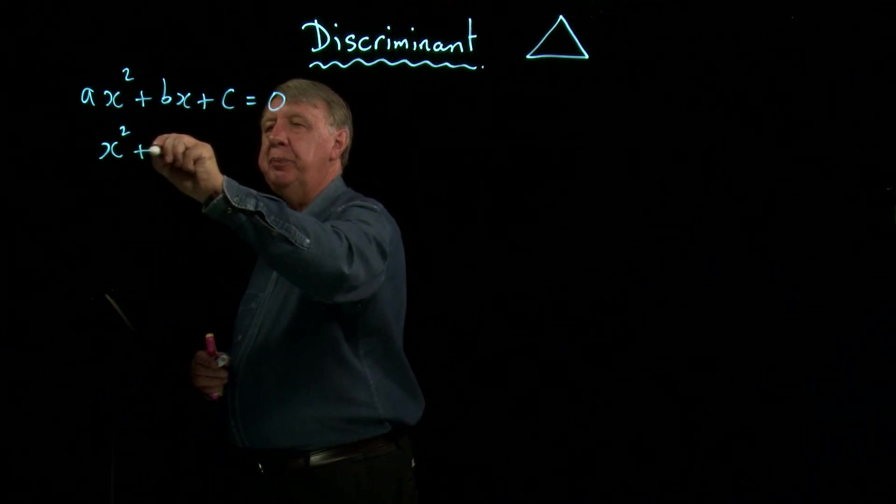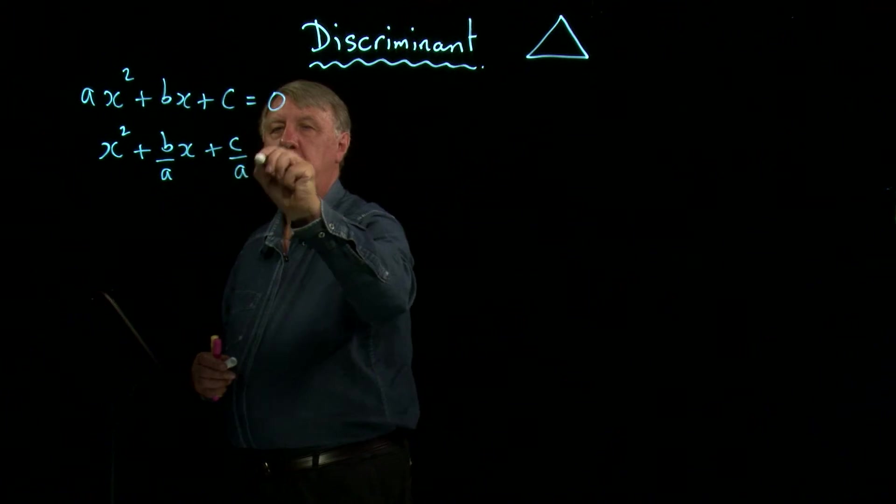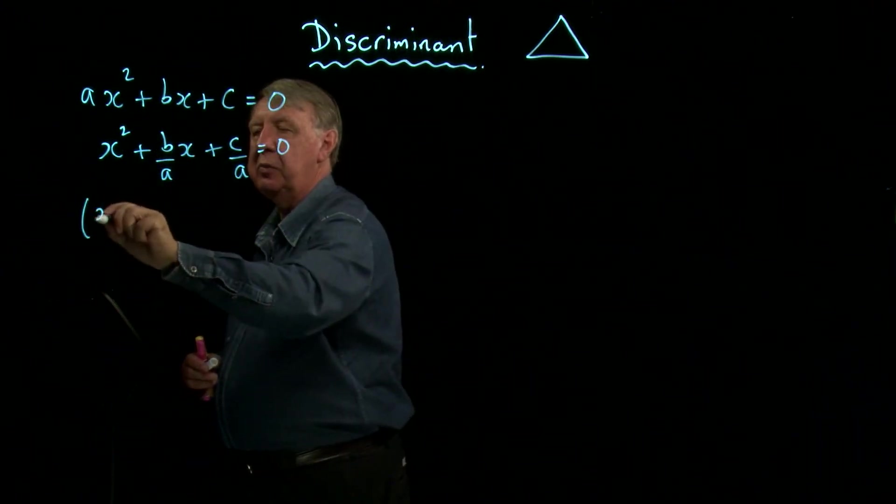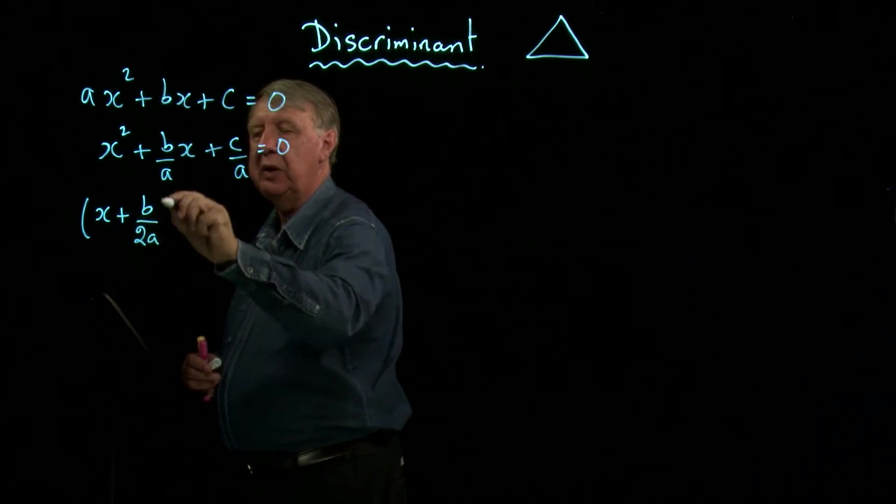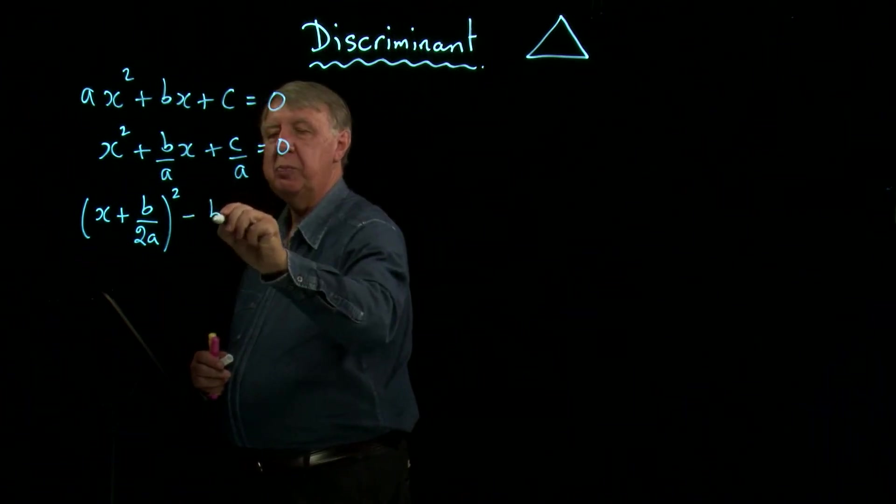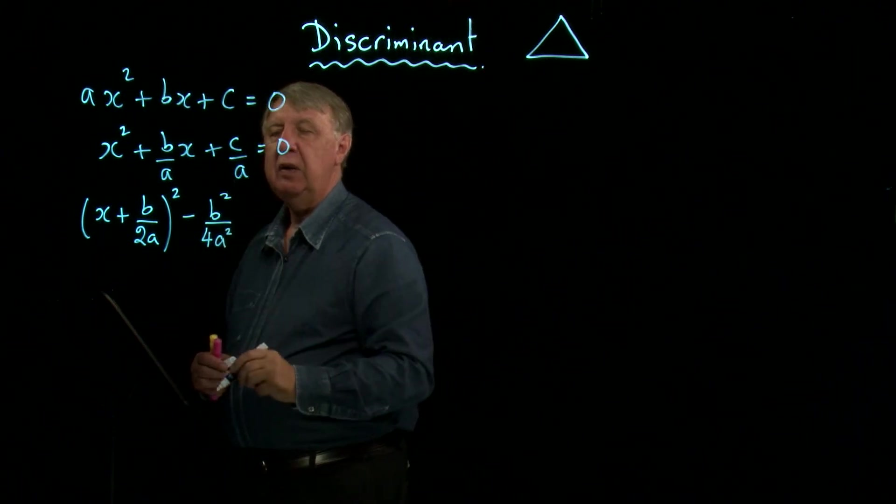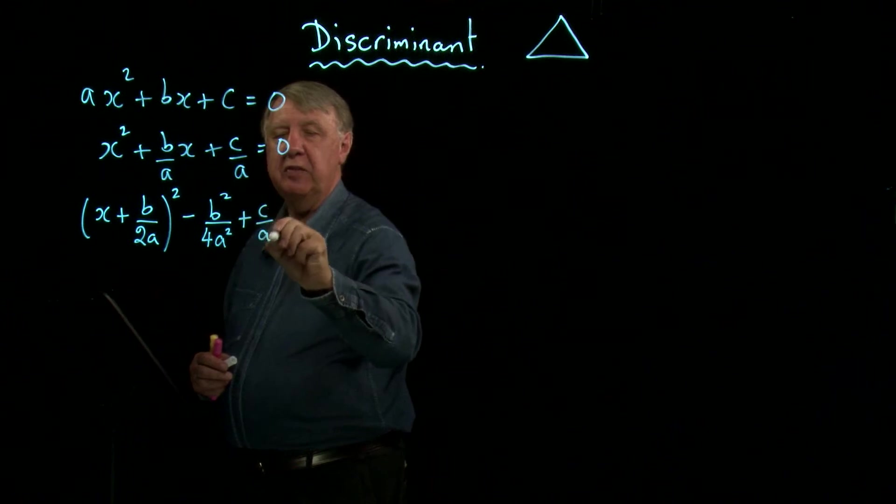So if I divide by a, then complete the square. So remember how to do that, you halve the number of x's, so that's b over 2a. You square that number, which is b squared over 4a squared. And you take it away again and then let's pop in the c over a.